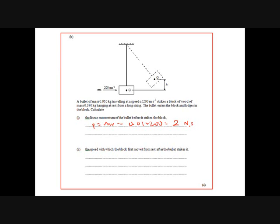The speed with which the block moves from rest after the bullet strikes it - well, this again is conservation of momentum. So we know it's going to have a momentum p of 2 newton seconds, and its mass is 0.39 plus another 0.01, because remember the bullet is now embedded inside the block, times the velocity. So 2 equals 0.4v, v equals 2 over 0.4, which is 5 meters per second.